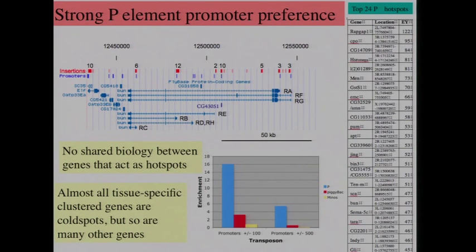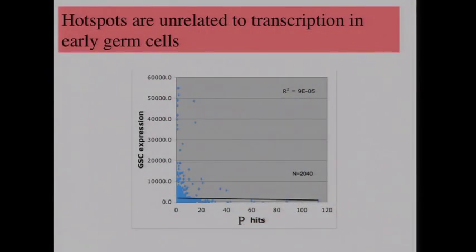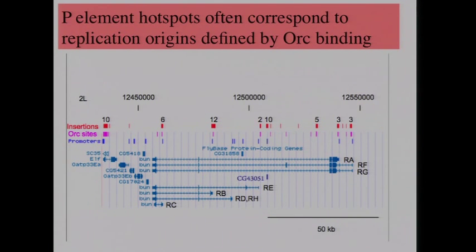When you look at the list of hotspots, there's no obvious physiology or logic to what they would be, and they've resisted all attempts at explanation. One early idea was they correlated with transcription in the germline — open chromatin in the germline was where they were going. But when we could actually measure expression levels in the germline, the correlation between germline expression and P element targeting is virtually zero.